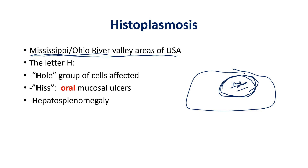Something important not on the slide: you typically get histoplasmosis from bat or bird feces. Patients often report that they were exploring a cave — caves are a very common place to acquire this. You can also get it in a city with a lot of pigeons, such as New York City, if you were a bird handler exposed to a lot of bird or bat feces.